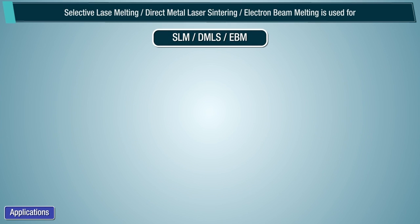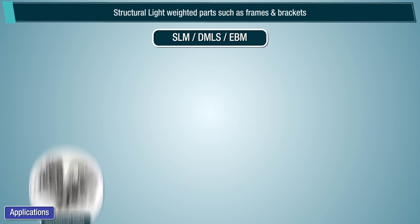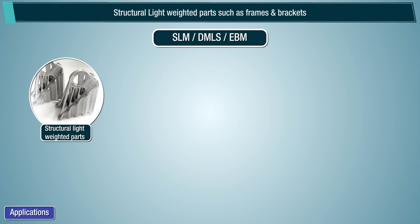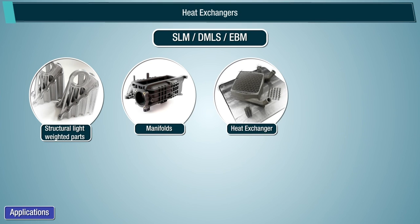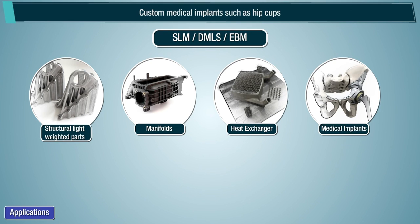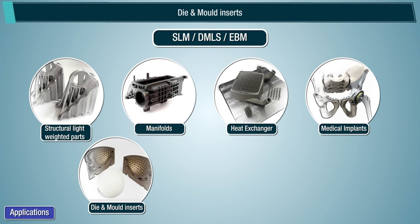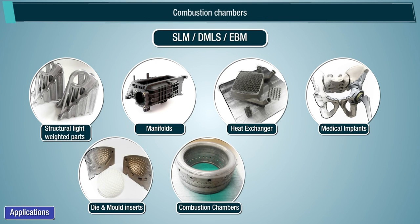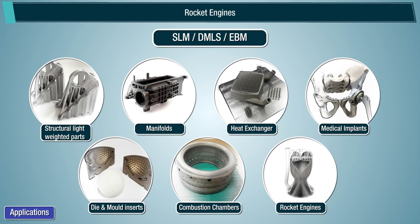Selective Laser Melting (SLM), Direct Metal Laser Sintering (DMLS), and Electron Beam Melting (EBM) are used for structural lightweight parts such as frames and brackets, manifolds, heat exchangers, custom medical implants such as hip cups, dies and mold inserts, combustion chambers, and rocket engines.